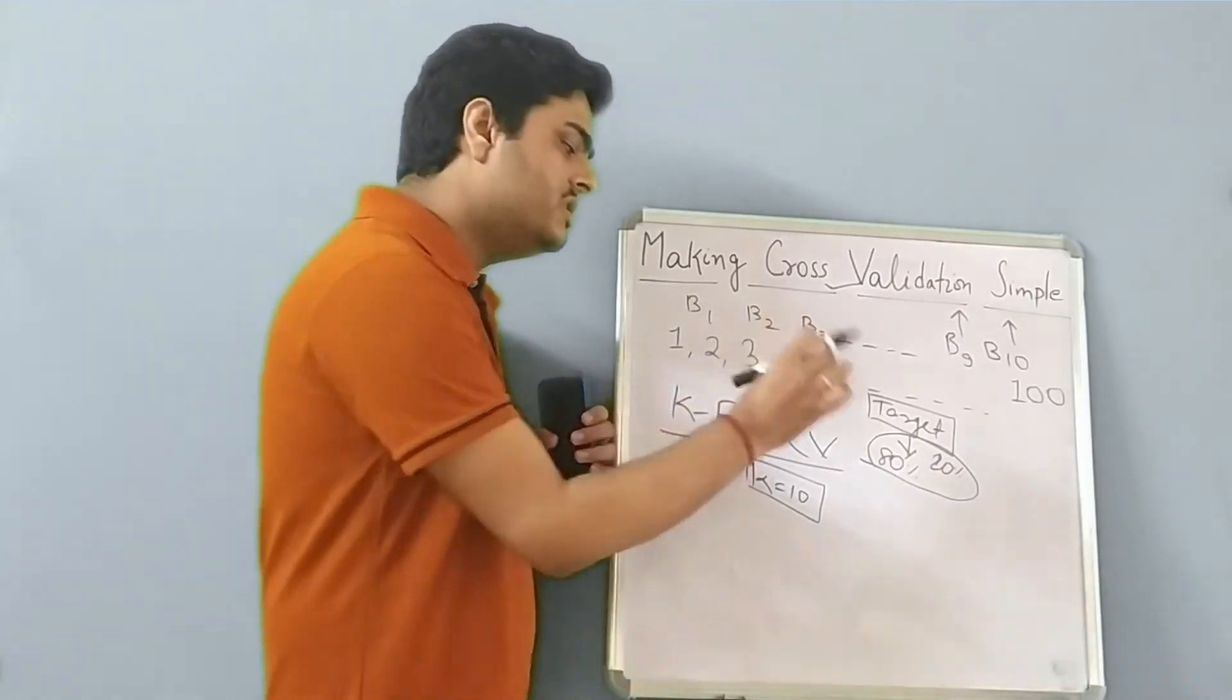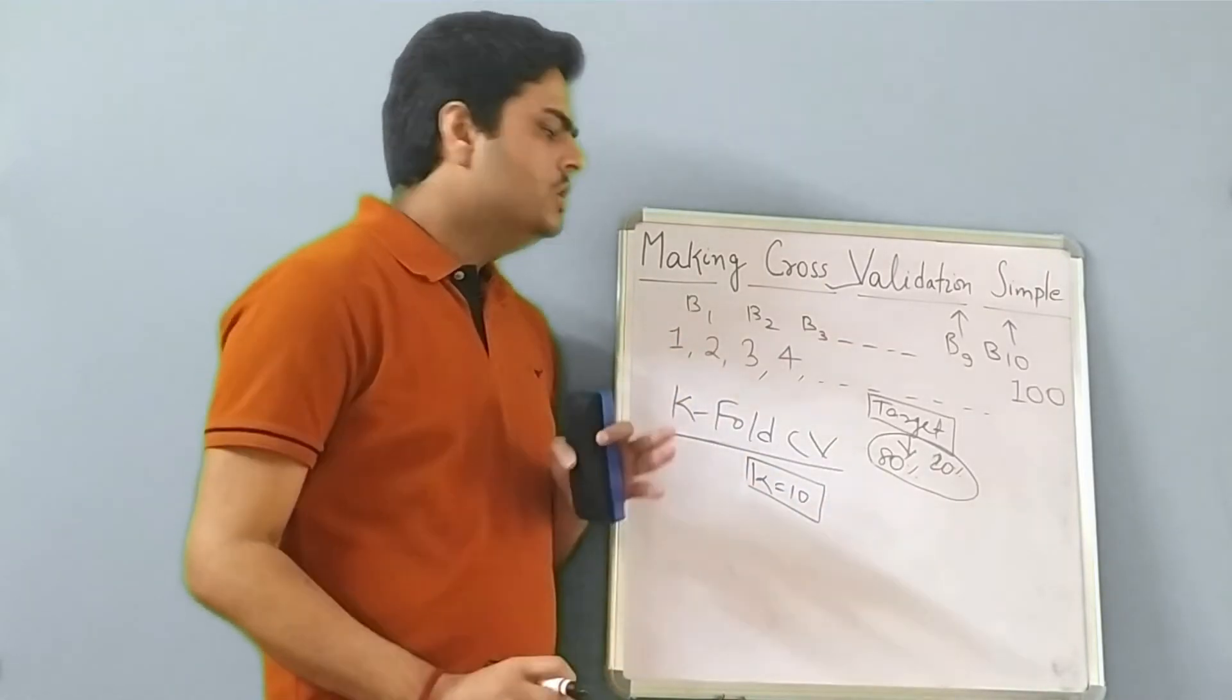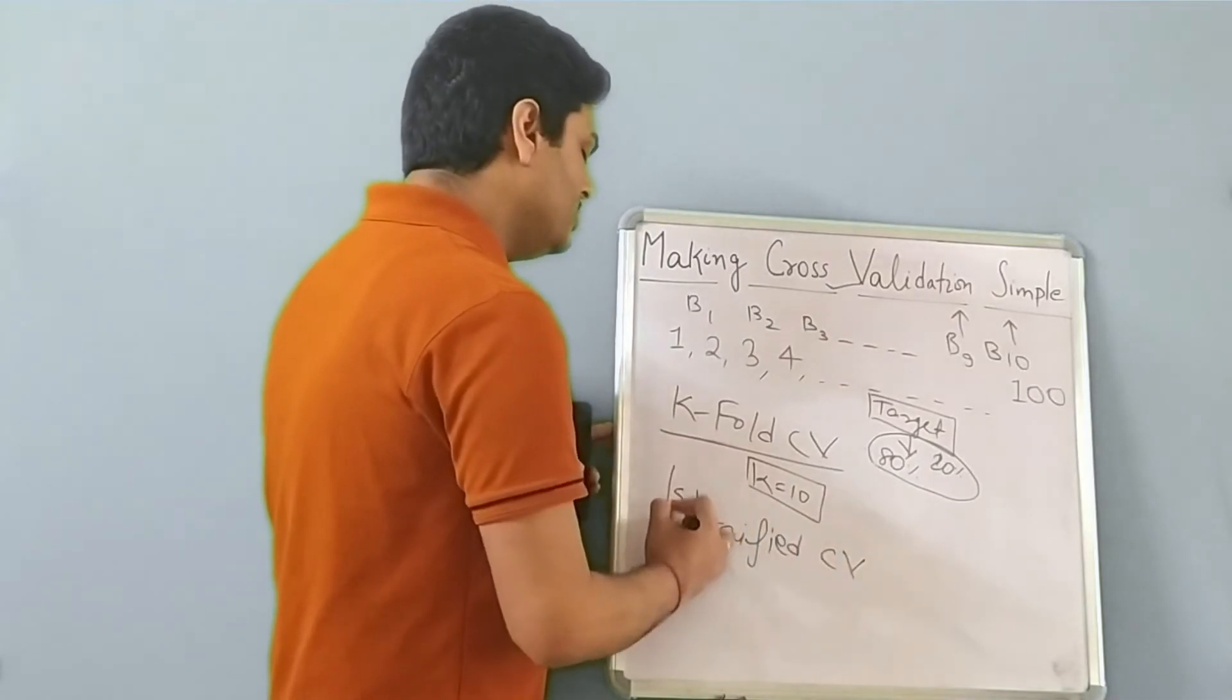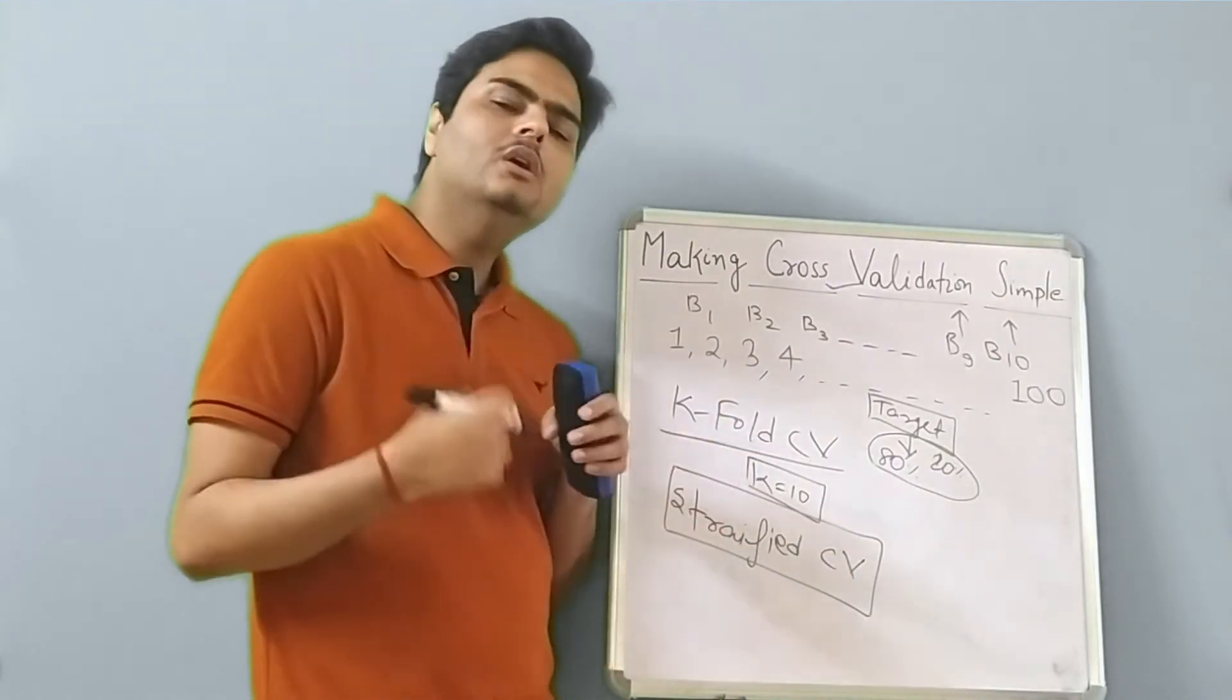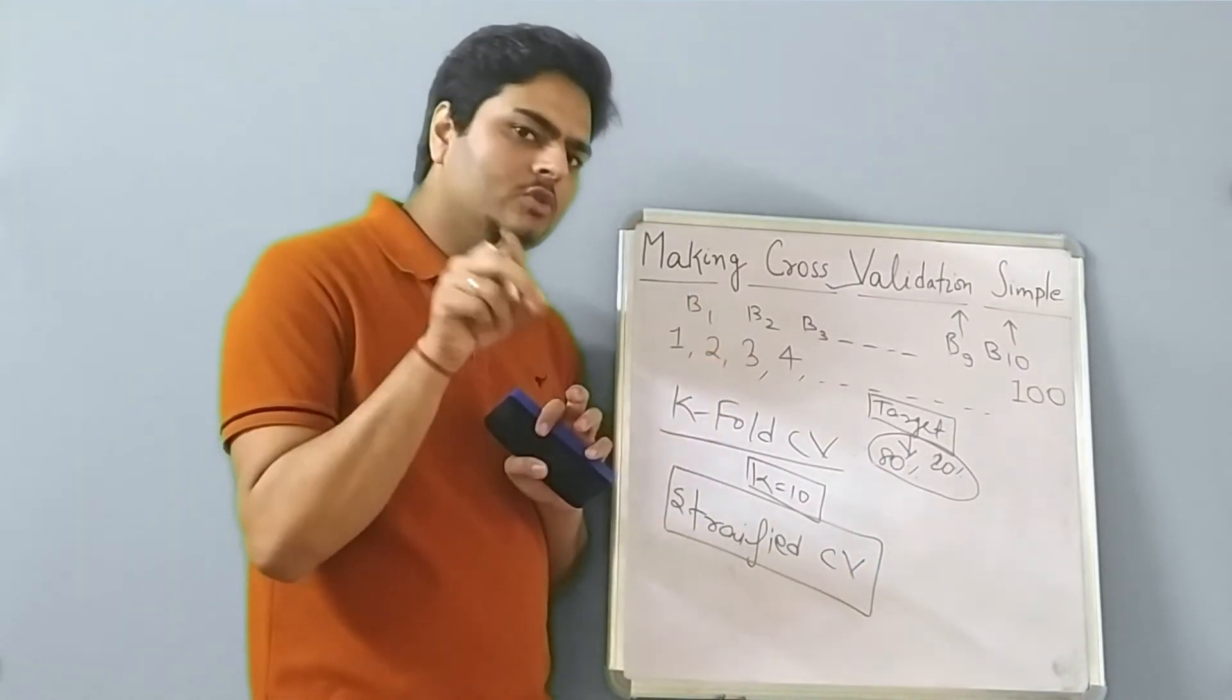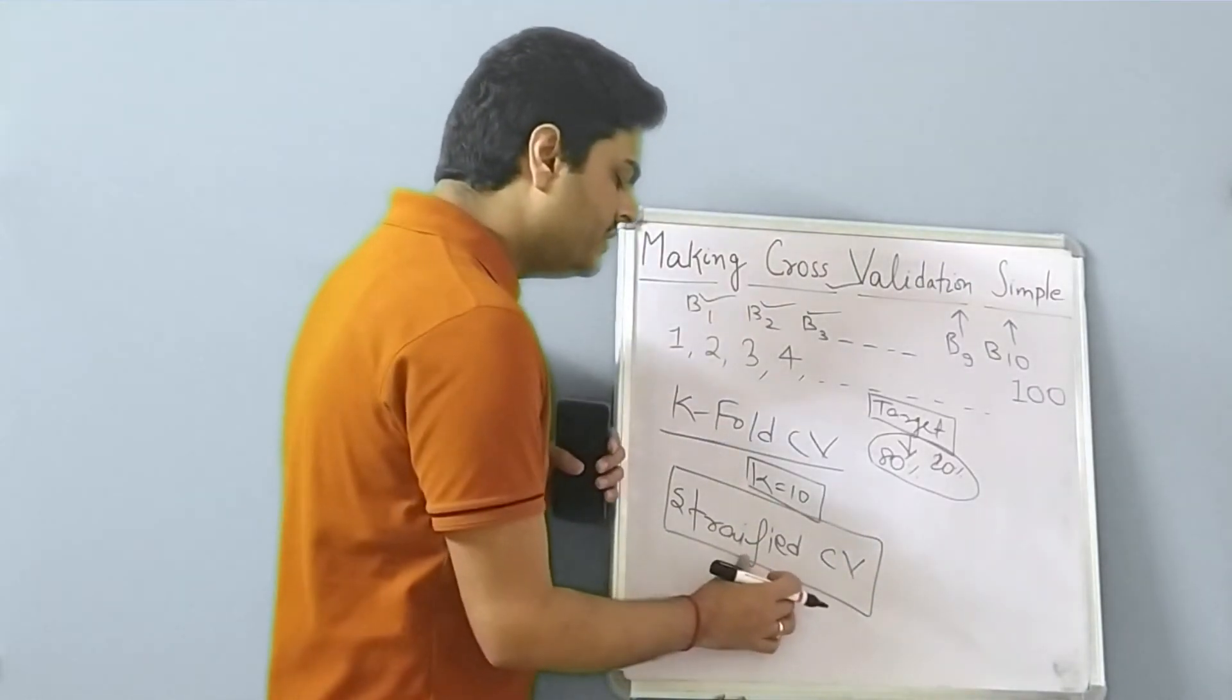And if this ratio does not get maintained, then what will happen? Model might have a biased learning from some of the iterations. To overcome this problem, there is an approach called a stratified cross validation or a stratified sampling. So if you do stratified approach, then what will happen is just one advantage on top of K fold CV. It will maintain the ratio of the features, whatever ratio of your data is there, that ratio will get maintained in all these buckets. It might not get maintained 100%, but it will be closer to that. That is the good point about the stratified cross validation.